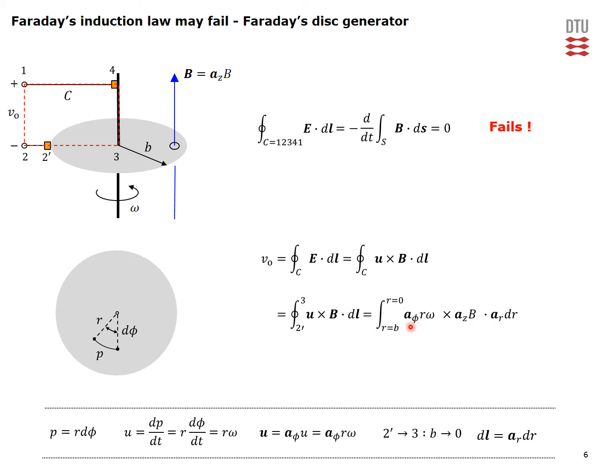The cross product of the φ unit vector with the z unit vector is in the radial direction, which when dotted with the radial unit vector gives unity. The rest is straightforward to integrate and, after applying the integration limits, yields the final expression for the induced electromotive force and thus the open circuit voltage of the Faraday's disk generator configuration.